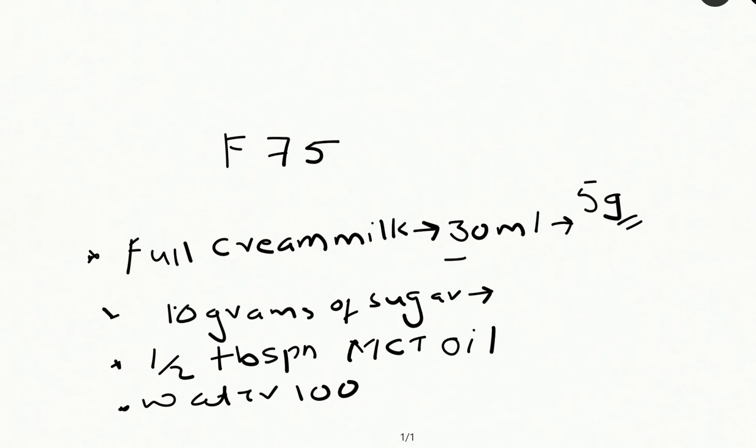On day 1, give 11 ml per kg per feed every 2 hours. Day 3, 4, and 5, give 16 ml per kg per feed every 3 hours. Day 6 and 7 onwards, give 22 ml per kg per feed every 4 hours.